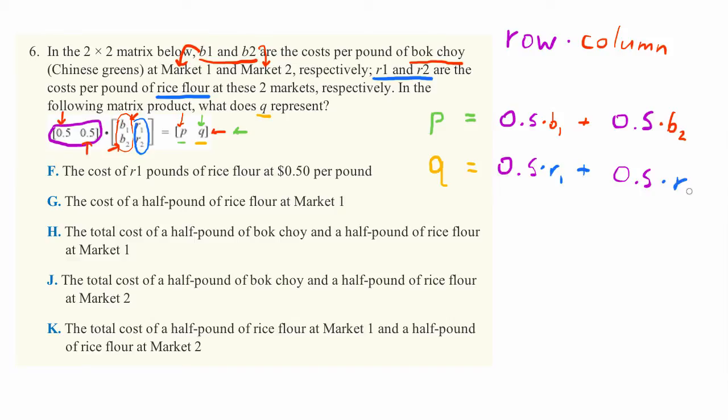And now we just need to actually interpret this equation. So what does this actually mean? This means we got 0.5 pounds of rice flour, right? R stood for rice flour. And specifically, we got 0.5 pounds of rice flour from the first market. So rice flour from market one. And we also got 0.5 pounds of rice flour from market two. So I'll just say from M1 and M2.